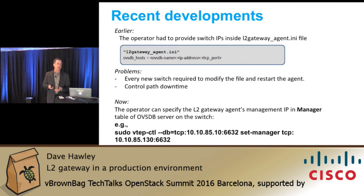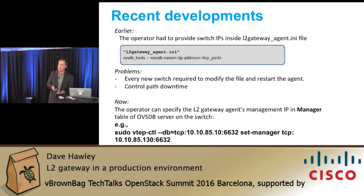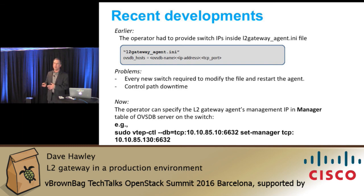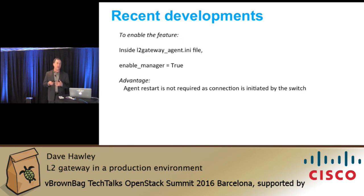Let's talk about the latest developments. Previously, we didn't have any good way of determining the switch IP relative to the agent itself. In order to add a new switch into your environment, you had to actually update the IP address in a config file and then reboot the agent, which is very disruptive to operation. The current approach is that you now specify the Layer 2 Gateway's management IP in a table inside the switch itself. So as you bring the switch up or reload it to provide that functionality, you don't need to do the agent restart. We've changed the directionality of the IP address management function by enabling the manager within the OVSDB schema inside the switch itself, eliminating the need for an agent restart.